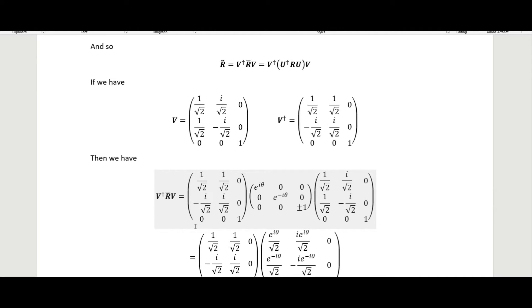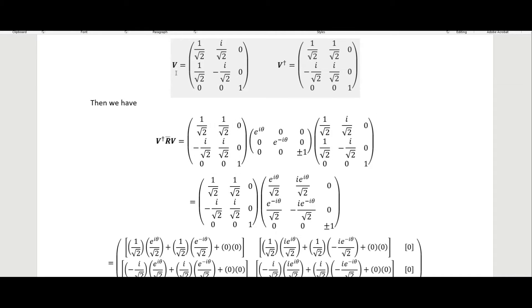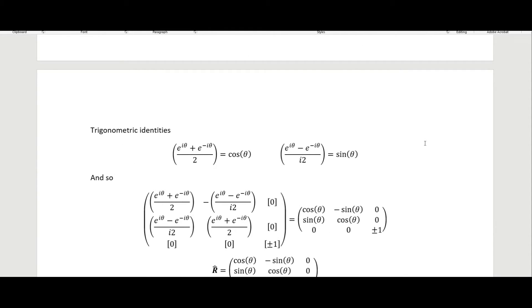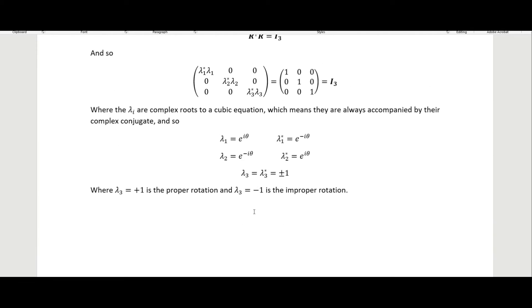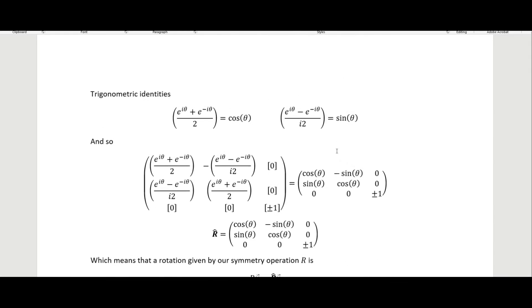Going through the matrix multiplication of V and its conjugate transpose acting on R̄ — which had e^(iθ), e^(-iθ), and plus or minus one — and applying trigonometric identities, we end up with the matrix R̂. This matrix R̂ contains cosine and sine terms with no complex numbers, so we've been able to replace the e^(iθ) terms from the diagonal and obtain a fully real matrix.